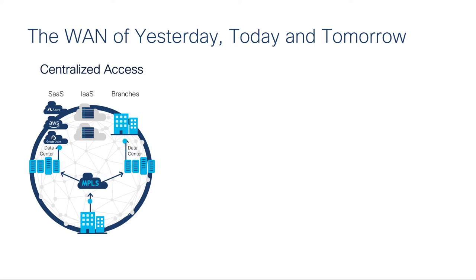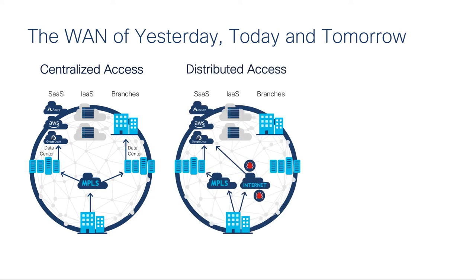So along comes SD-WAN, which ushers in a new model of internet access: distributed. With SD-WAN, organizations were free to drop internet-bound traffic off locally at the branch to allow it to access the cloud resources directly. And coupled with features like SD-WAN cloud on-ramp, it could be reasonably optimized over the internet.